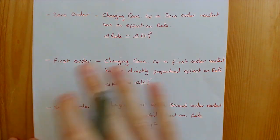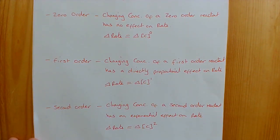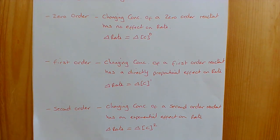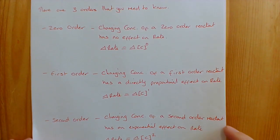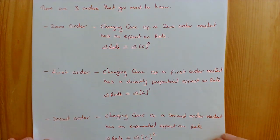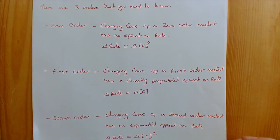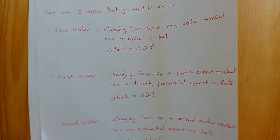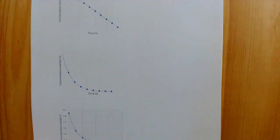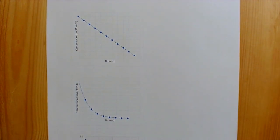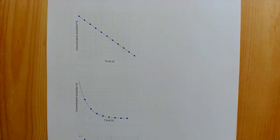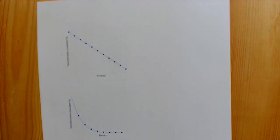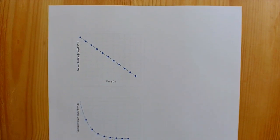So that's what we mean by zero order, first order, and second order. Now we're going to look at how we determine whether a reactant is zero, first, or second order. The first method we can use is concentration-time graphs to determine the order of the reaction.